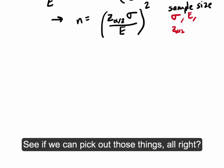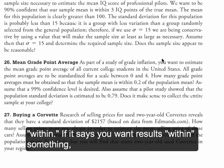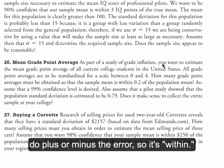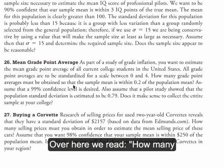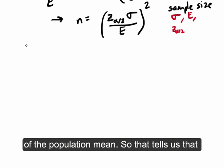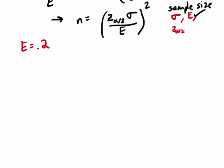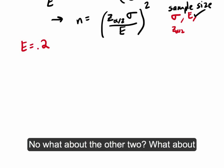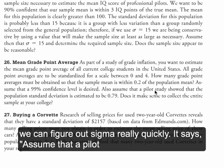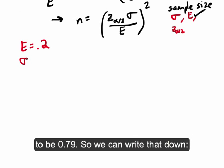Looking back at the problem, when you see the word 'within,' that's telling you the margin of error, because you do plus or minus the margin of error in a confidence interval — plus or minus is like 'within.' The problem says the sample mean must be within 0.2 of the population mean, so E equals 0.2. For sigma, the problem says the pilot study showed the population standard deviation is estimated to be 0.79, so sigma equals 0.79.